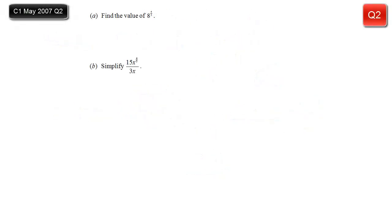Right, part A. Find the value of 8 to the power of 4 thirds. Can't see the power there, so I'll rewrite it for you. Now the key thing when the power is a fraction is what each part means. The top is the power that you have to raise it to. So we're going to have to raise it to the power of 4. The bottom is the root that you're going to take. So in this case, it's the cube root.